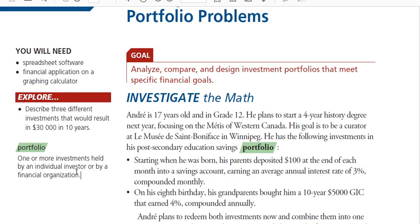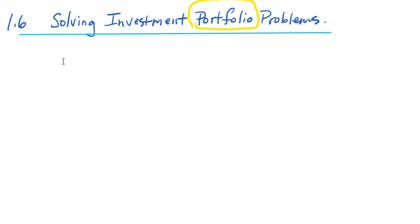A diversified portfolio means different investments that are different from each other, so that if one is not doing so well, hopefully another investment that's different is doing well, and they kind of balance each other out. So if your portfolio is diversified, you have a better chance of at least one or maybe two of these types doing well, even if one is not. That's what we're going to focus on first - the meaning of what a portfolio is: one or more different types of investments.